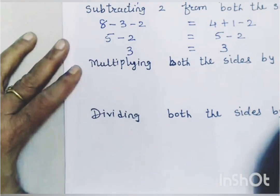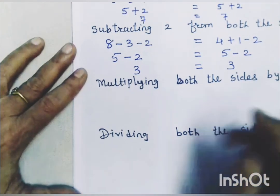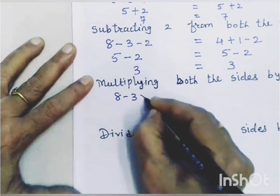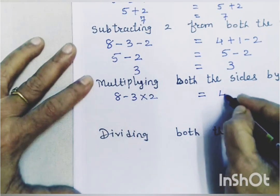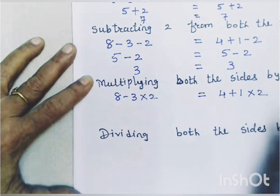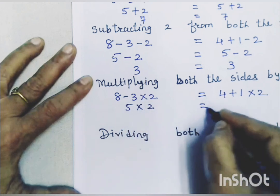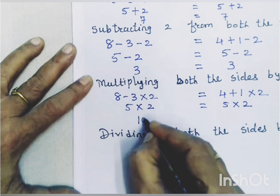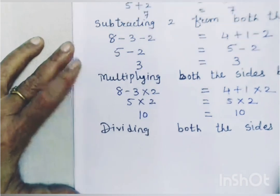Now let us multiply both the sides by 2. Here, 8 minus 3 multiplied by 2, and on the right hand side, 4 plus 1 multiplied by 2. So 5 multiplied by 2 equals 5 multiplied by 2, which gives us 10 equals 10.